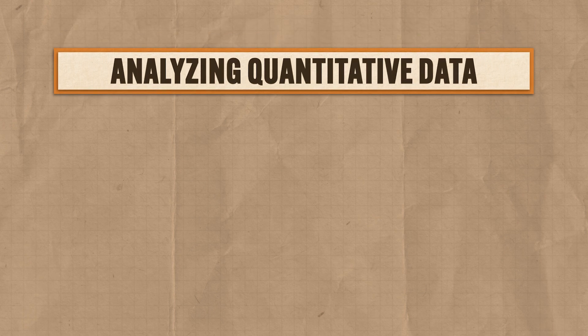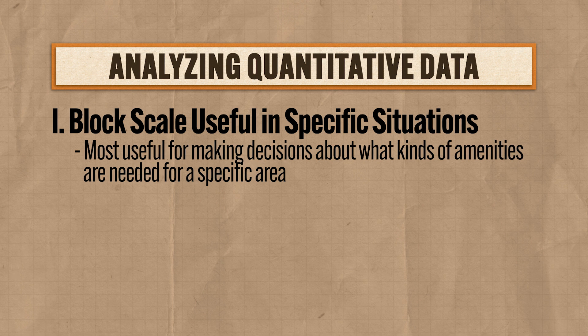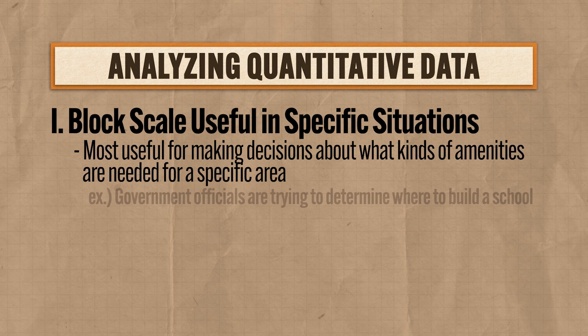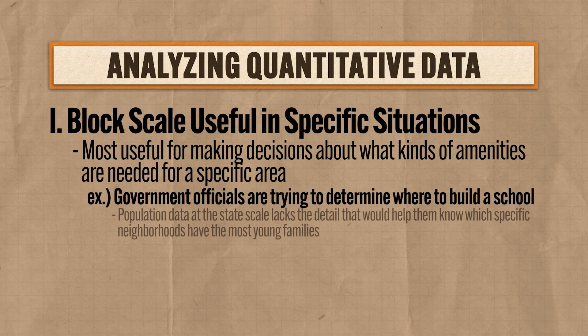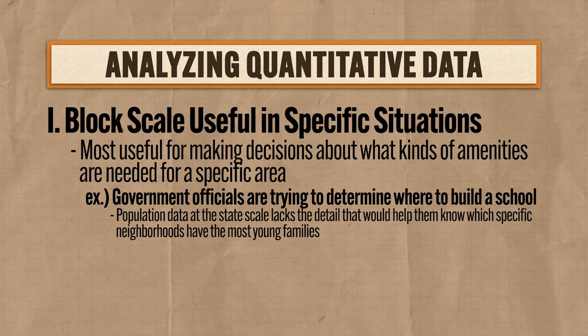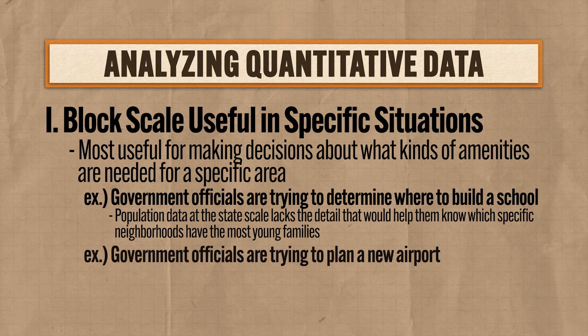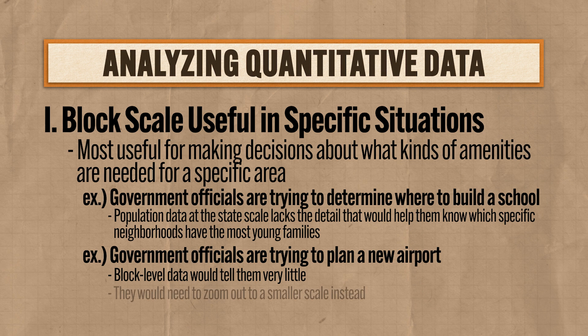Analyzing quantitative data at the block scale is useful in making decisions about what kinds of amenities are needed for a specific area. For example, if government officials are trying to determine where to build a school, population data at the state scale will be useless because it lacks the detail to show which specific neighborhoods have the most young families. But if government officials are trying to plan a new airport, block-level data would tell them very little — instead they would need to zoom out to a smaller scale. The quantitative mathy-mathy data provides city officials a lot of vital information to help them plan initiatives for their urban area.